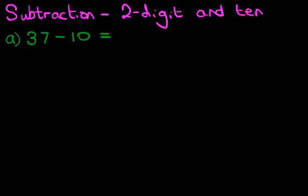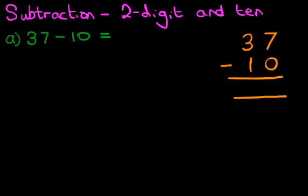What is 37 minus 10? Now, the first stage is to rewrite this question in the vertical format, in columns. So, let's do that over here. 37 minus 10. Make sure you write this correctly in nice, neat columns.